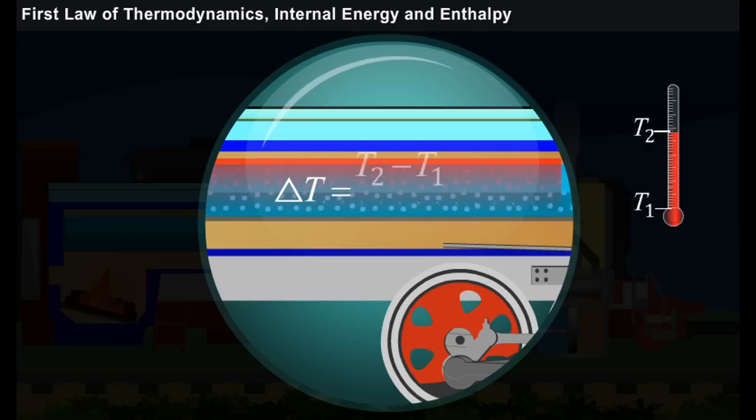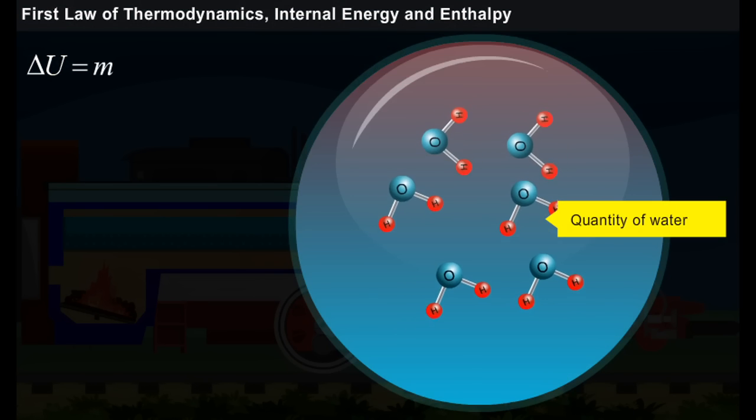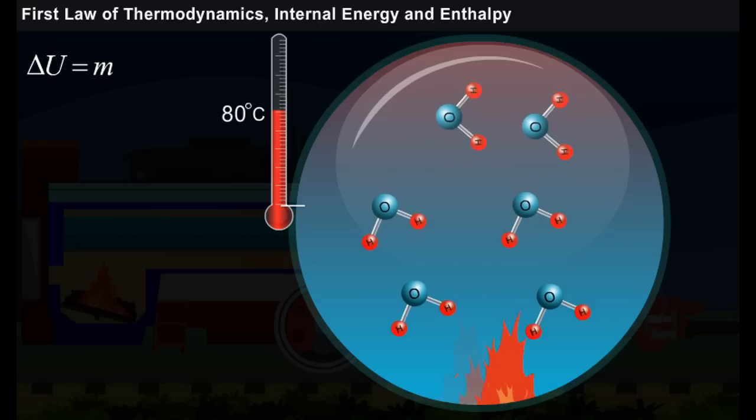This change in the internal energy delta U depends upon the quantity of water and its specific heat capacity, that is the heat required to increase the temperature of water by 1 degree Celsius, and also changes in temperature delta T.